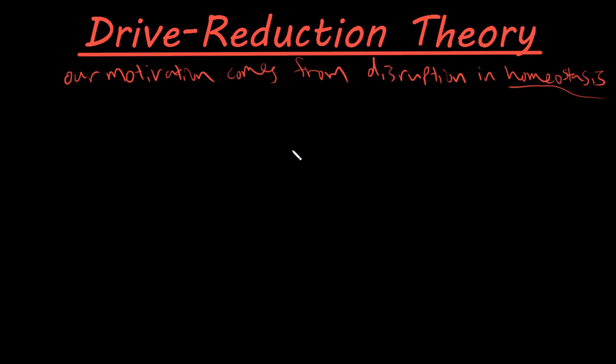So in our body we need things to be equal and if that is disrupted or we have an imbalance of something, then this is going to drive us to reduce that imbalance. And so that's what drive reduction theory really describes. It's our drive to reduce that imbalance from homeostasis. So let's take a closer look at what exactly this means.